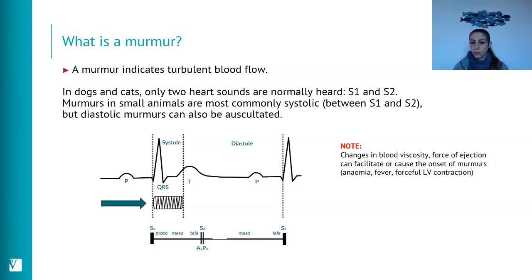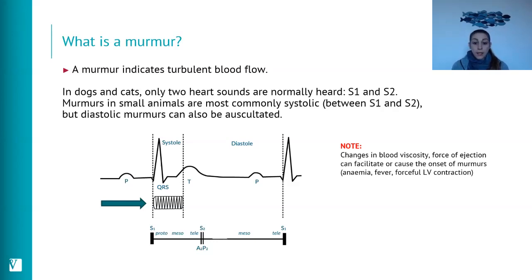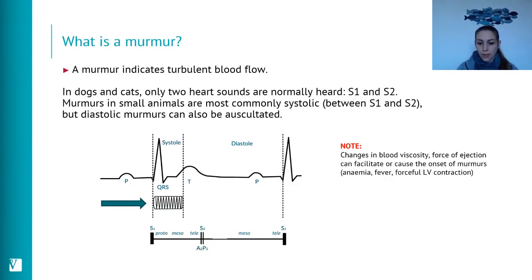Not all murmurs have to be associated with heart disease. When evaluating an anemic patient, a dog with fever, or a very fit athletic dog — perhaps a narrow-chested one — we may detect very soft murmurs that may not necessarily be associated with underlying structural heart disease. We need to bear this in mind when we evaluate our patients.